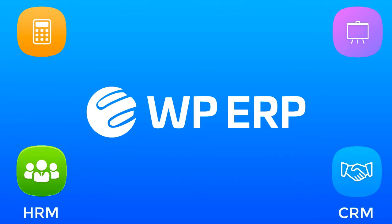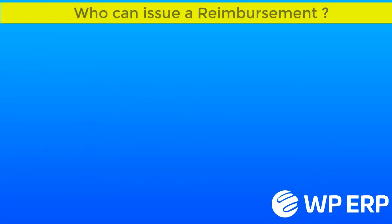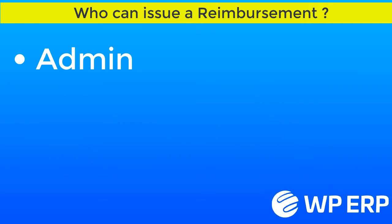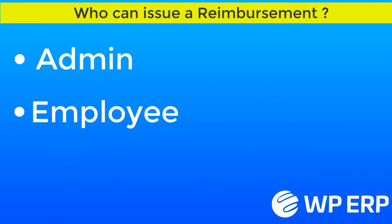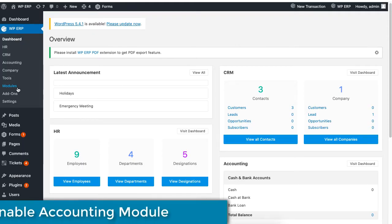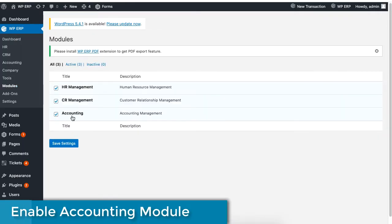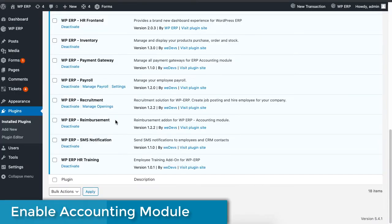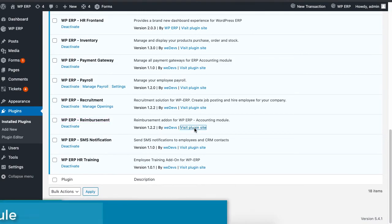The WordPress ERP allows you to issue reimbursement as an admin and as an employee. Be sure to enable the accounting module and install the reimbursement plugin. Let's start.